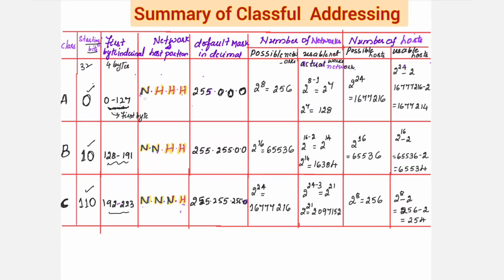You can also remember easily with these 4 letters. For Class A, you write N, H, H, H — that means the first byte is indicating the network portion. For the network portion, you should always write all the bits as 1s in binary. Once you write all the bits as 1s, the equivalent decimal value is 255. So N indicates the network portion, which is 255, and this comes under the default mask or subnet mask.